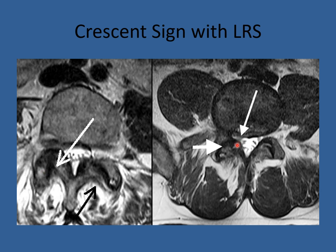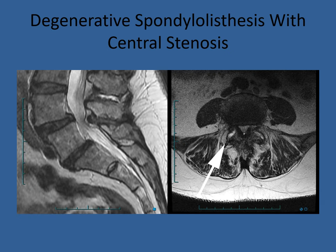This subluxation creates a condition called lateral recess stenosis. Here, one nerve root looks free, but another nerve root is under duress. As the patient stands up, the vertebra can move forward, trapping the nerve root and creating buttocks and leg pain. Degenerative spondylolisthesis can create central narrowing, and that central narrowing creates stenosis. Here's an example where degenerative facet disease has narrowed the spinal canal considerably and the nerves are compressed.